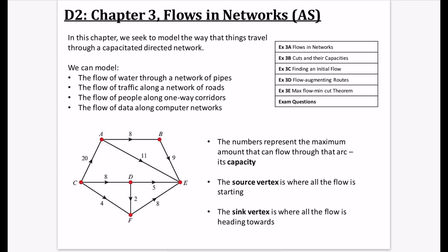We can model things with this. Most commonly, think of it as the flow of water through a network of pipes — if the water exceeds a particular rate, the pipe could burst. We could also model the flow of traffic along roads, where the numbers represent the maximum cars per minute, or the flow of people along one-way corridors and data along computer networks.